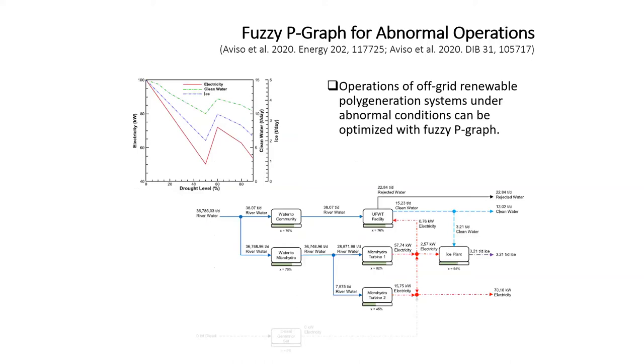Earlier this year, we took the same fuzzy P-graph methodology and extended it not for the design problem, but for the operation problem. We took the case of a polygeneration plant with a hydroelectric prime mover in a hypothetical off-grid remote community. We considered how such a plant should be operated if there's a drought and the river flow rate is reduced. Depending on the extent or severity of the drought, you may have to switch off parts of the plant and adjust the operating state of those which remain in operation, all the while trying to maintain the outputs required by this remote village by way of electricity, drinking water, and ice for refrigeration needs.